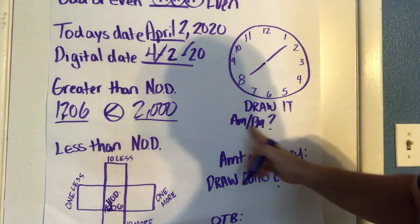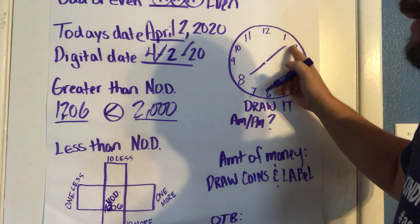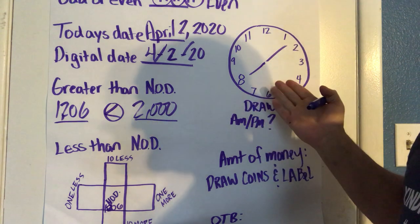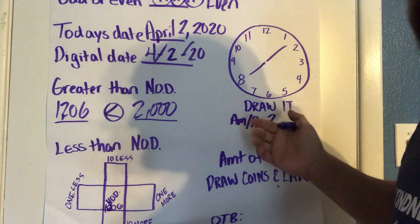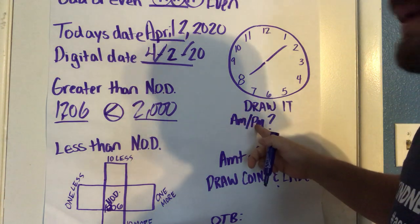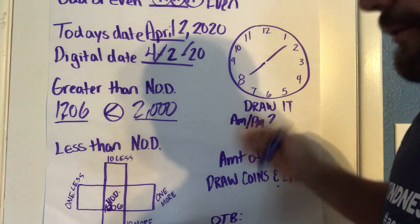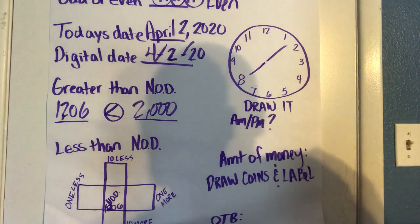And then tell me something that you would do at 8:07 a.m. and 8:07 p.m. So they might say something like, 8:07 a.m. I'm already at school, I'm in specials. At 8:07 p.m., I'm in bed or I'd be getting ready for bed or something like that.